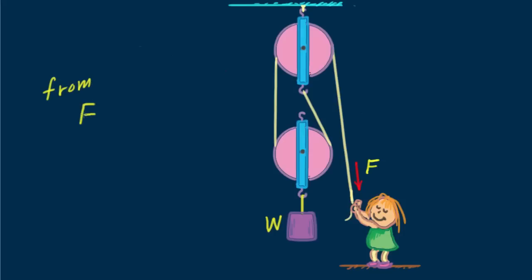From F times D equals W times H. W over 2 times D equals WH. So we see H equals half D. Again, the height raised is half the distance that Nellie pulls. If, for example, she pulls downward 50 centimeters, the load rises 25 centimeters.